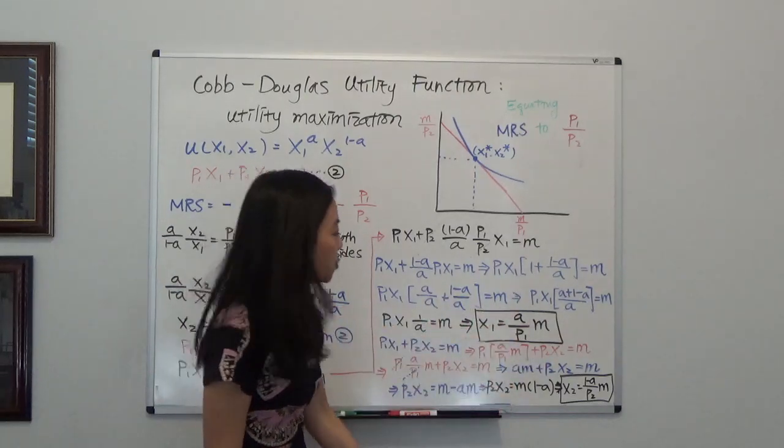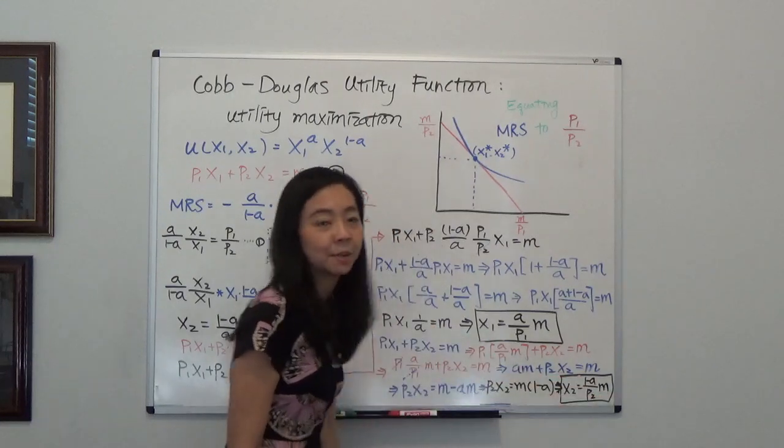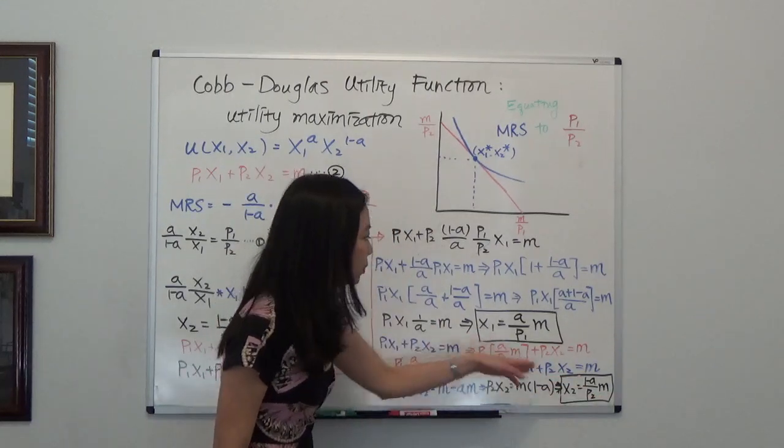But at the end, you will find x2 is equal to 1 minus a divided by p2 times m. And that's my optimal consumption bundle.